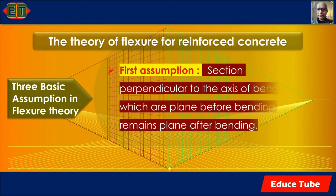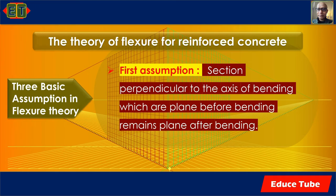The theory of flexure for reinforced concrete is based on three basic assumptions that are sufficient to calculate the moment resistance of a beam. The first assumption is that sections perpendicular to the axis of bending that are plane before bending remain plane after bending — in short, plane sections remain plane.